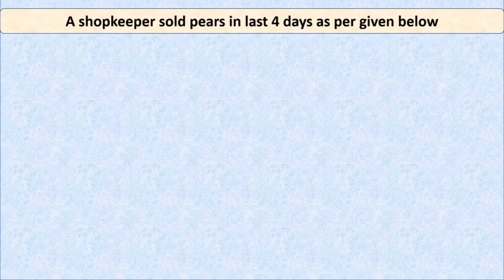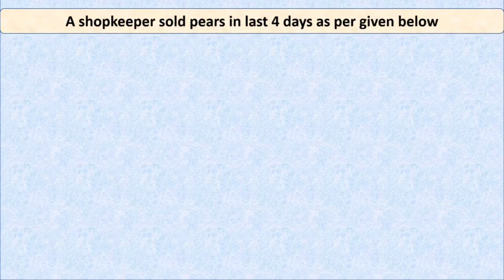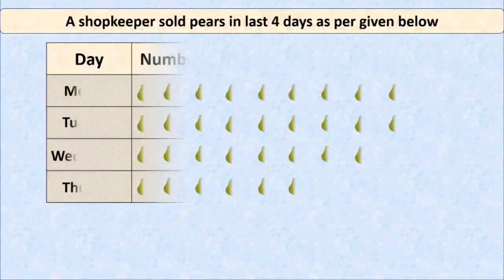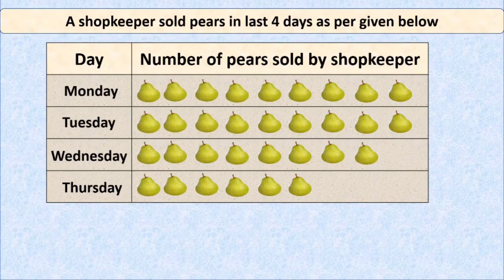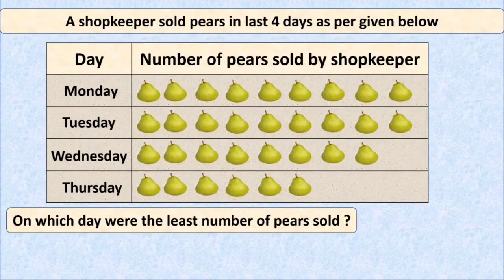Here is the first question. A shopkeeper sold pears in the last four days as per the table given below. The first column shows the name of the day and the second column shows the number of pears sold by the shopkeeper on that particular day. The question is: on which day were the least number of pears sold?